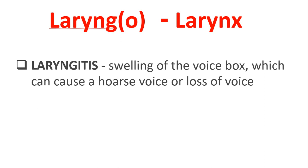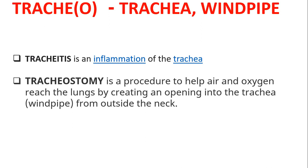The next part is the trachea, also known as the windpipe. 'Tracheitis' is an inflammation of the trachea. 'Tracheostomy' — as we know, 'ostomy' means creating an opening — is a process to help air and oxygen reach the lungs by creating an opening into the trachea from outside of the neck, used when people are unable to breathe through the nose normally.